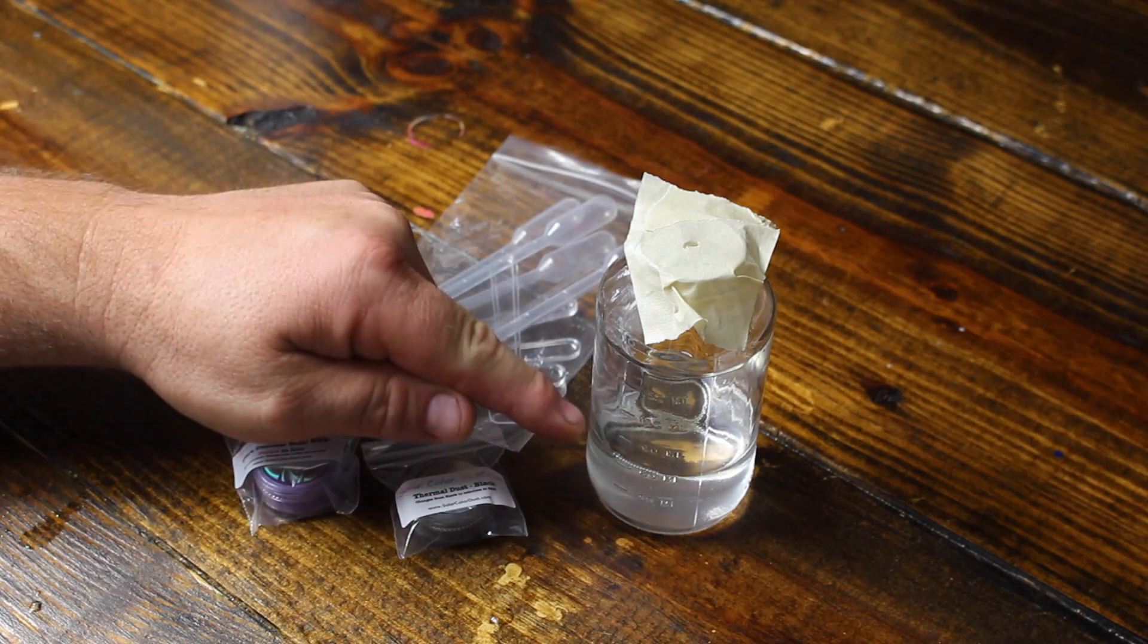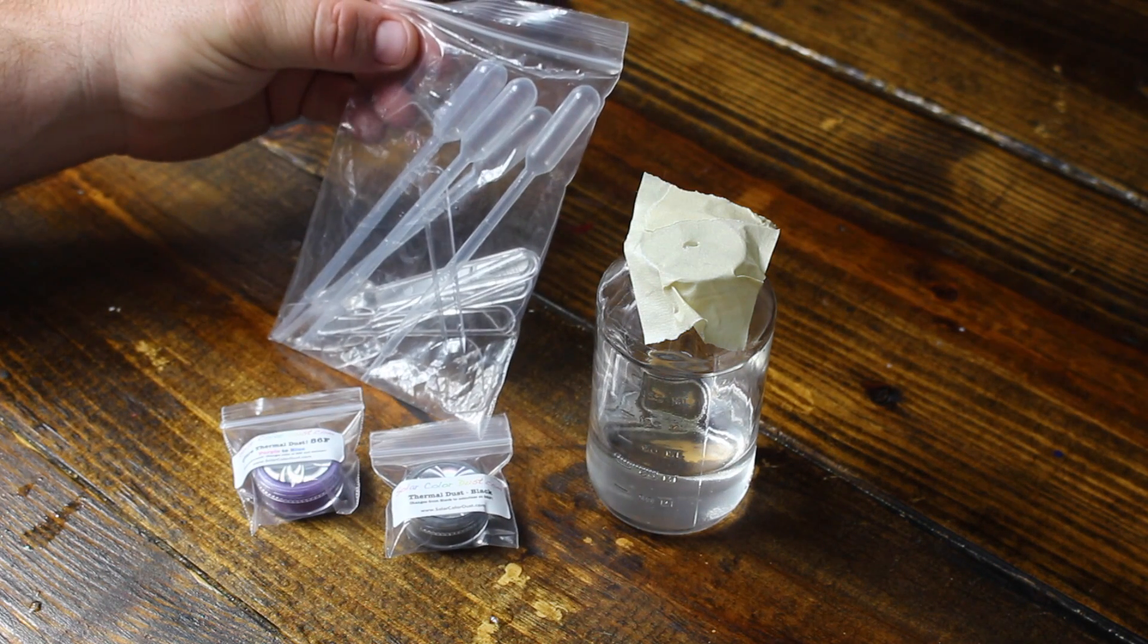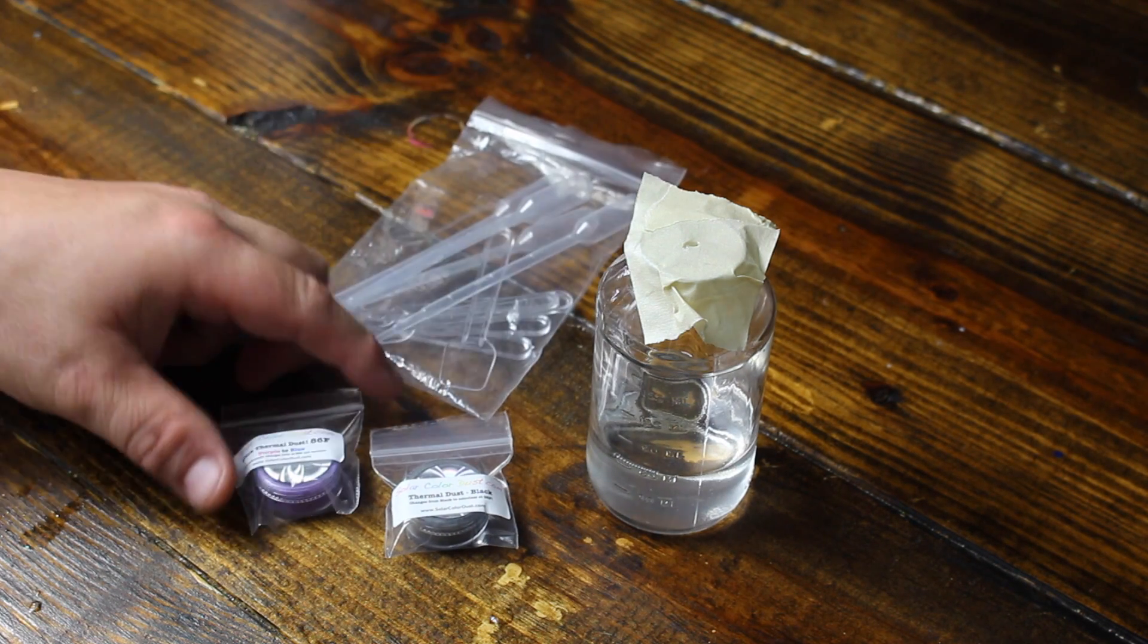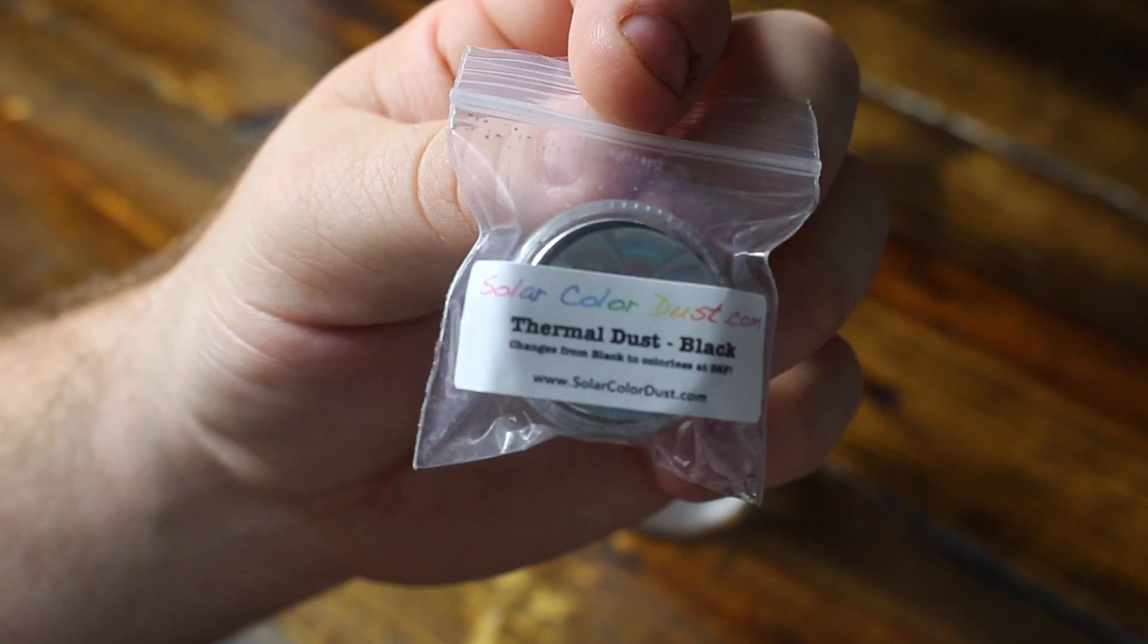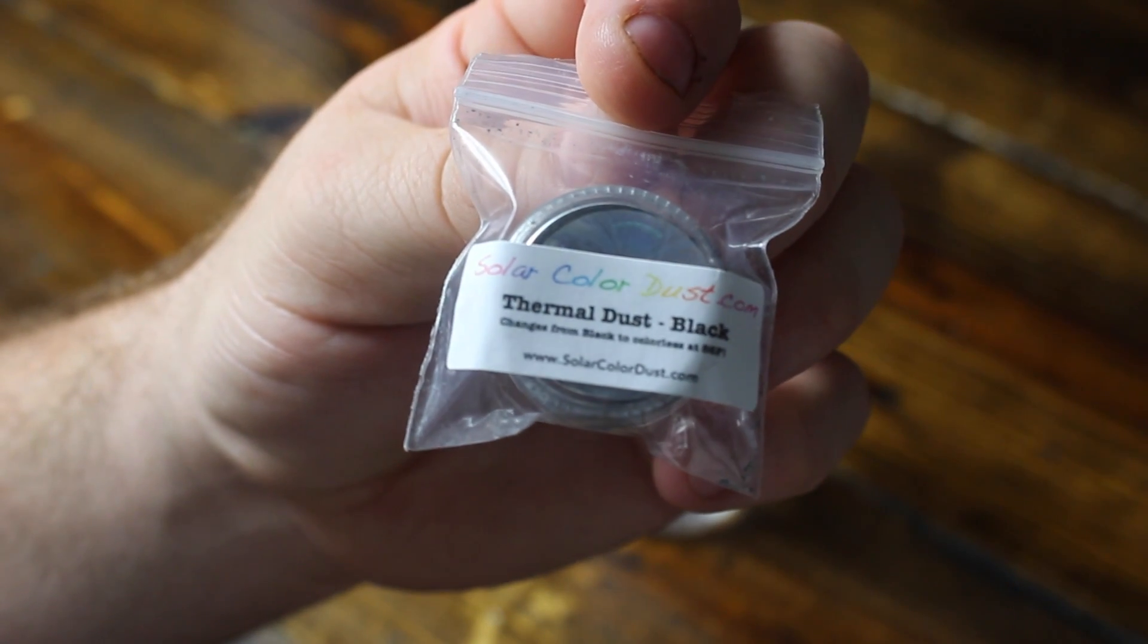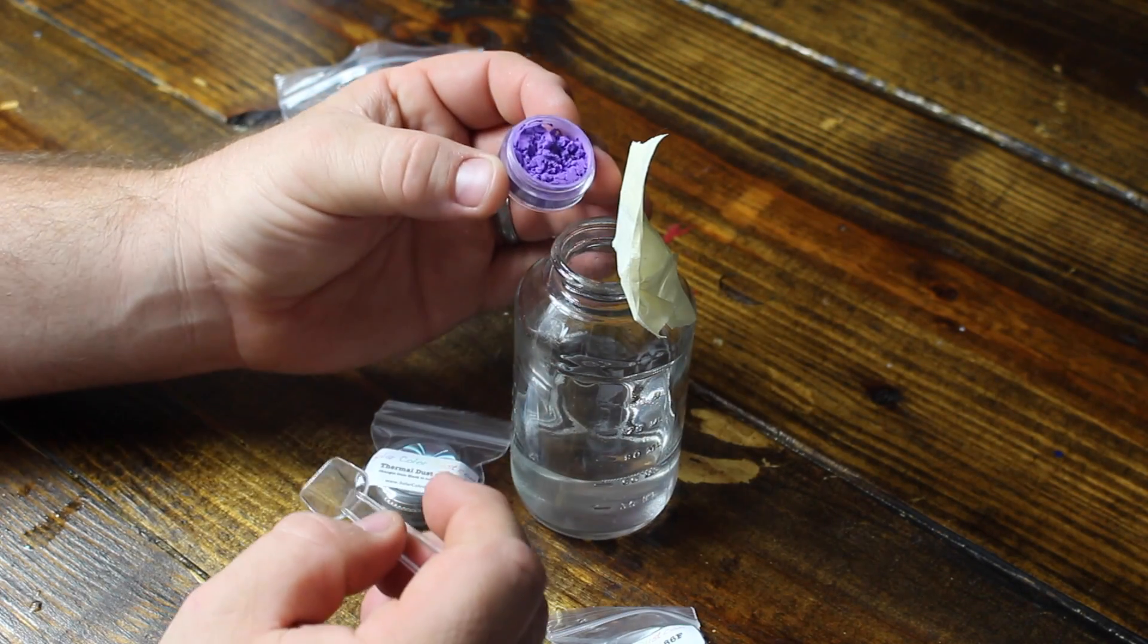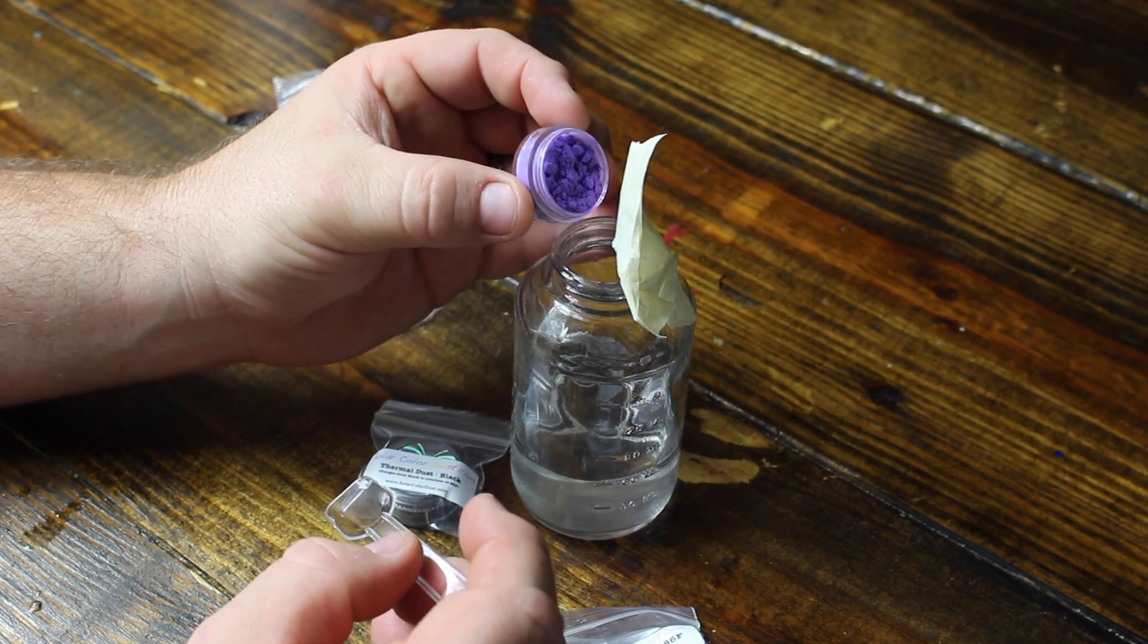So this right here is 10 minutes after the gloss has been in the jar and it's been sitting here. I'm showing the thermal color dust that changes at 86 degrees from purple to blue, and this one changes black to clear. In this video I'm going to be using the purple to blue method. Now I didn't do any kind of precise measurements.